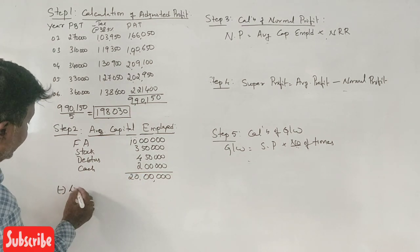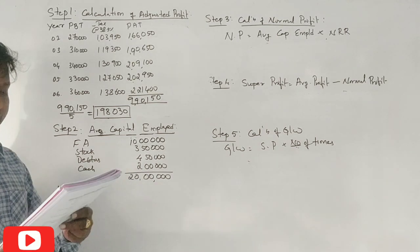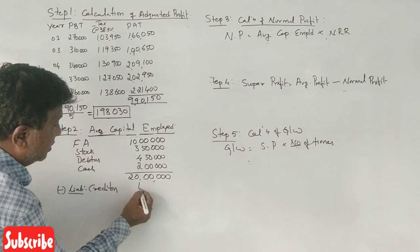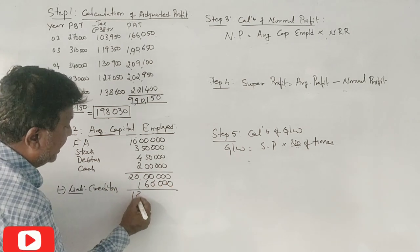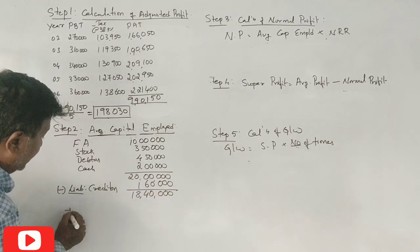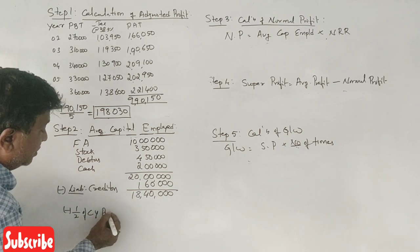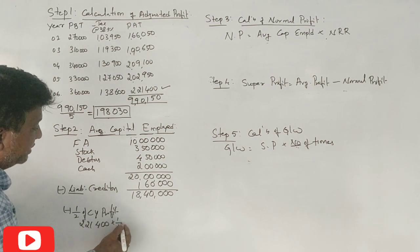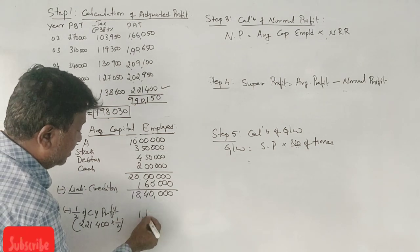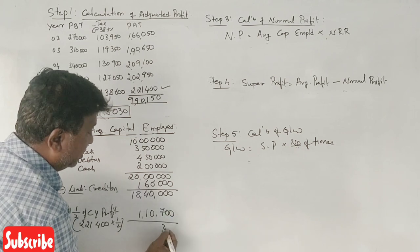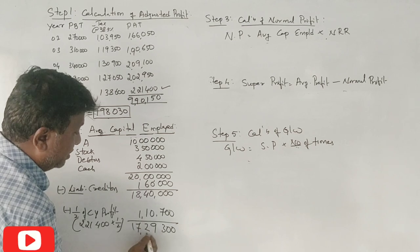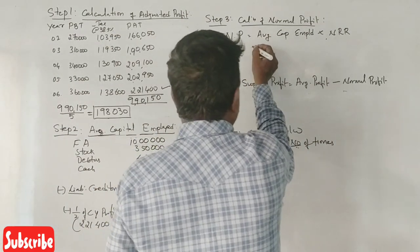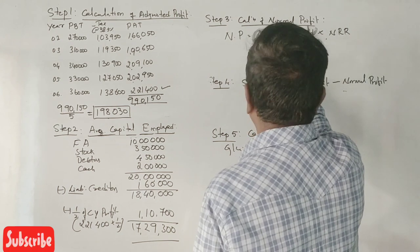Total liabilities are 20 lakhs. Liabilities minus fictitious assets and external liabilities. We have sundry creditors of 1 lakh 60 thousand. Deduct half of current year profit. Current year profit is 2,21,400 into half equals 1,10,700. So capital employed is 18,40,000 minus 1,10,700 equals 17,29,300. This is the average capital employed.